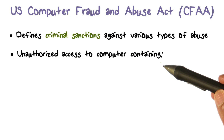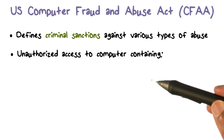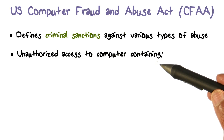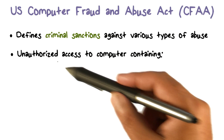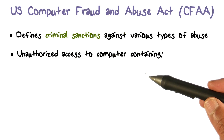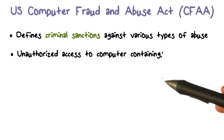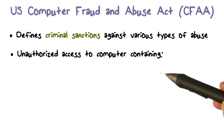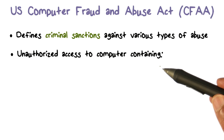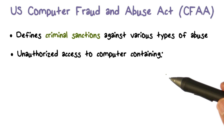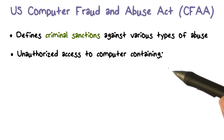The CFAA covers unauthorized access to computers. In the physical world we have trespassing laws. Here, we're talking about trespassing somebody's computer that is connected to the internet. A computer obviously has things of value, and if you happen to be the cyber criminal, that's who is being targeted by this law.